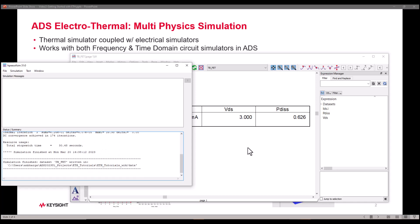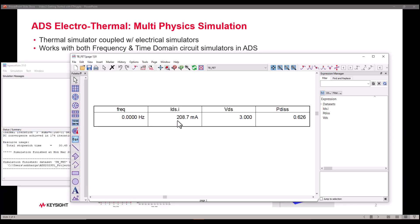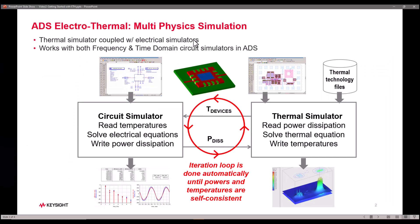And once simulation is finished now you can come back and see the drain current has reduced from 211 milliamperes to 208 and power dissipation has reduced from 634 milliwatt to 626 milliwatt. And all that happened behind the scene and user was totally transparent when this whole loop was running.